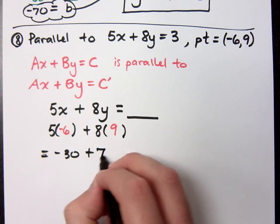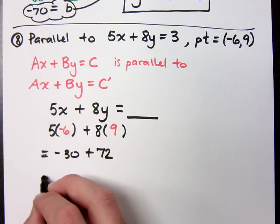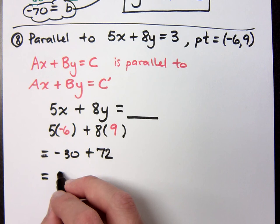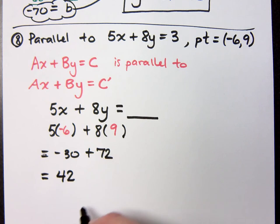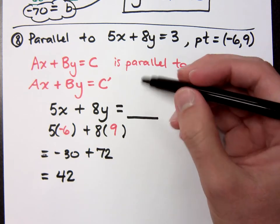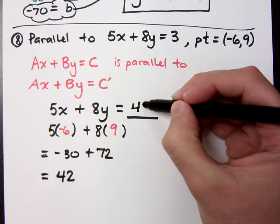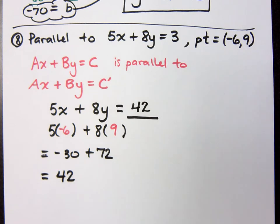Negative 30 plus 72 equals what? I know I did not hear a calculator being pressed. Oh my word. It's 42, so that's the number that should go here.